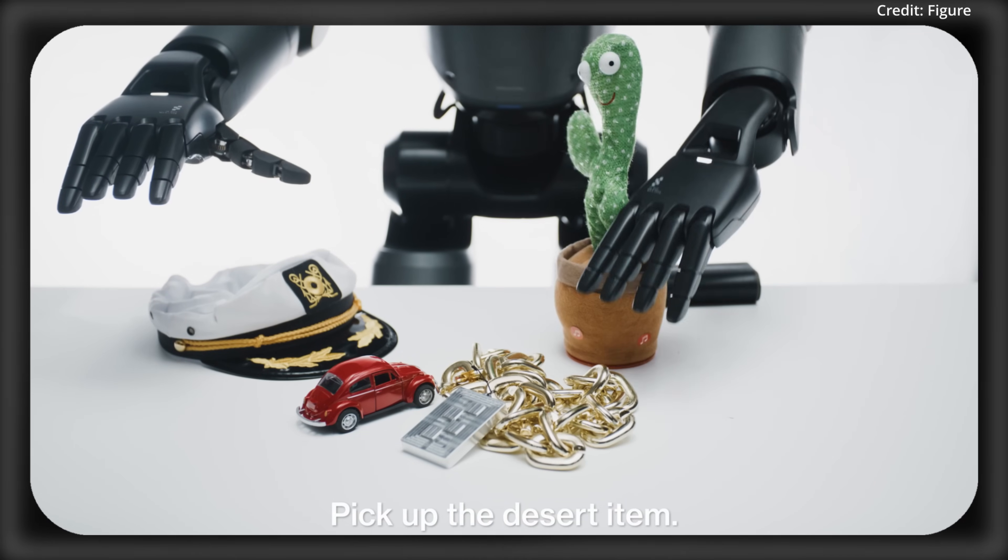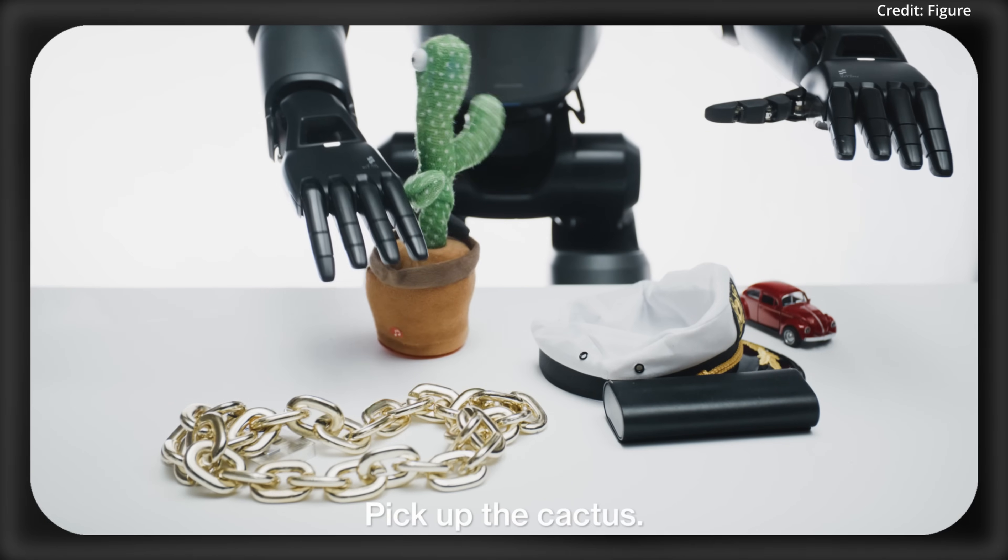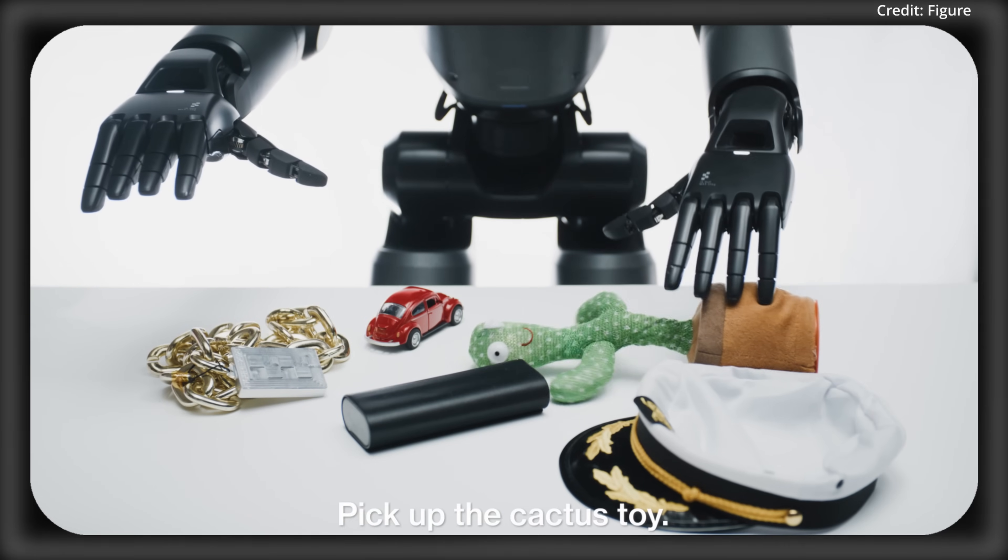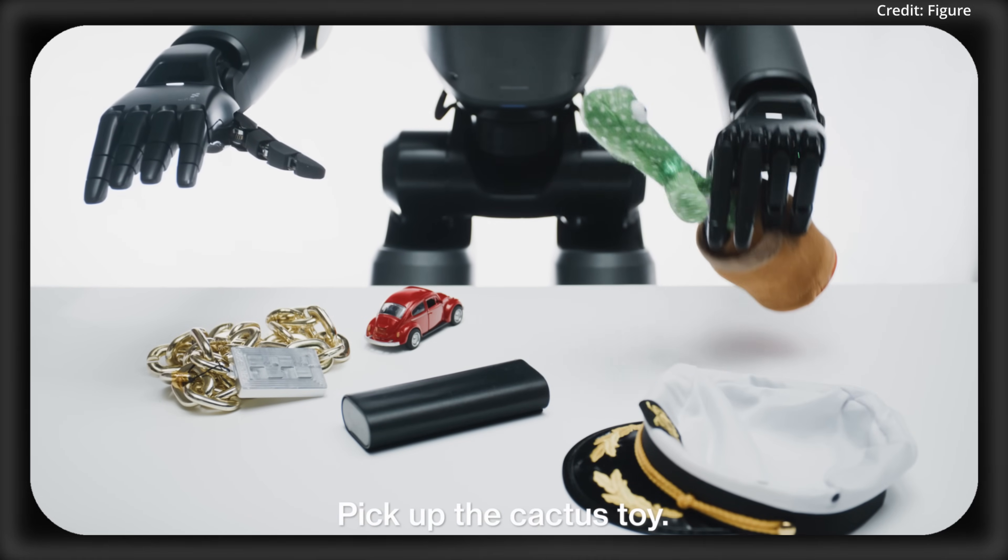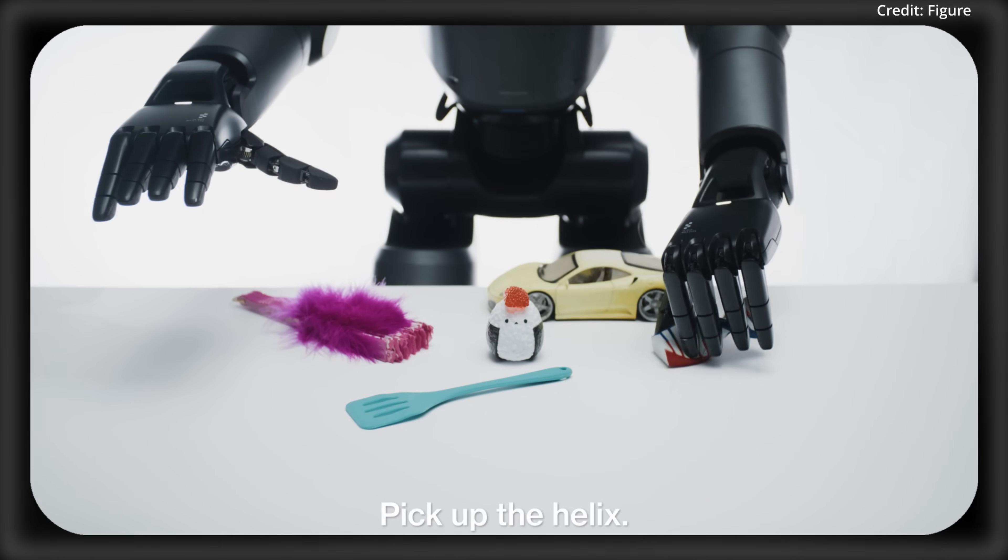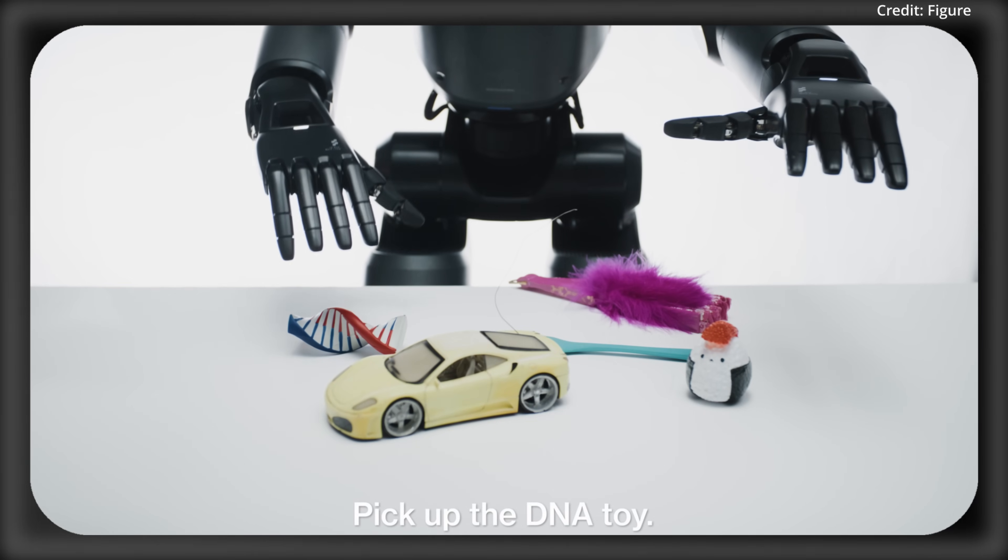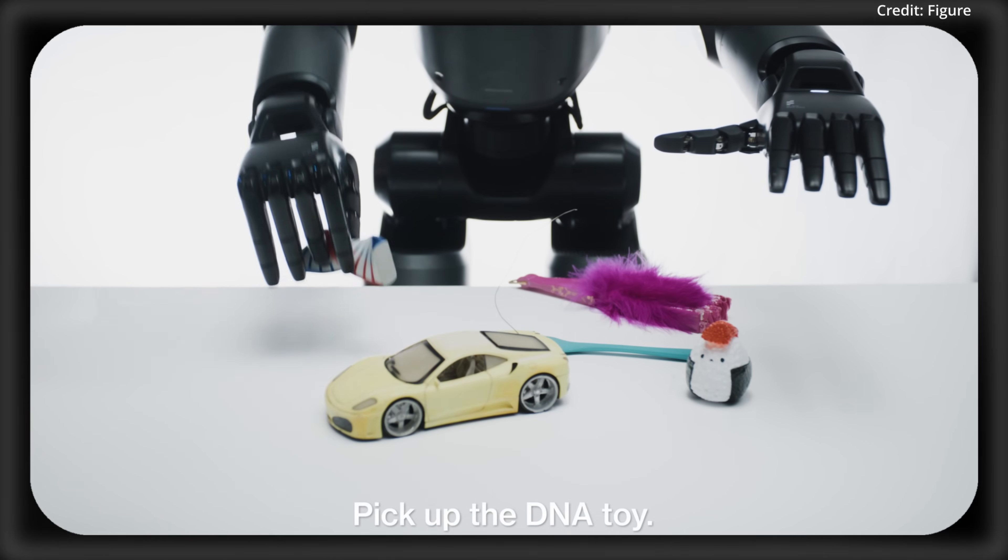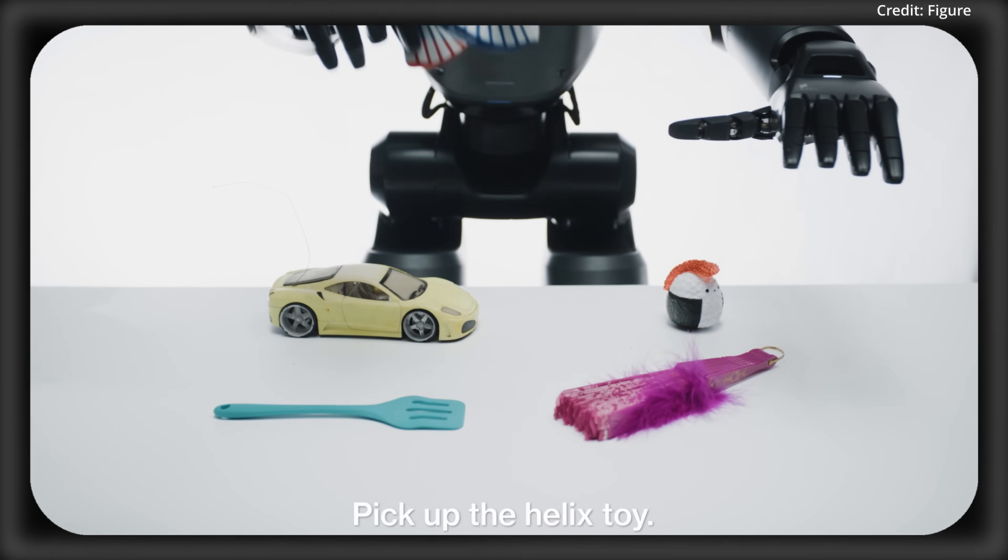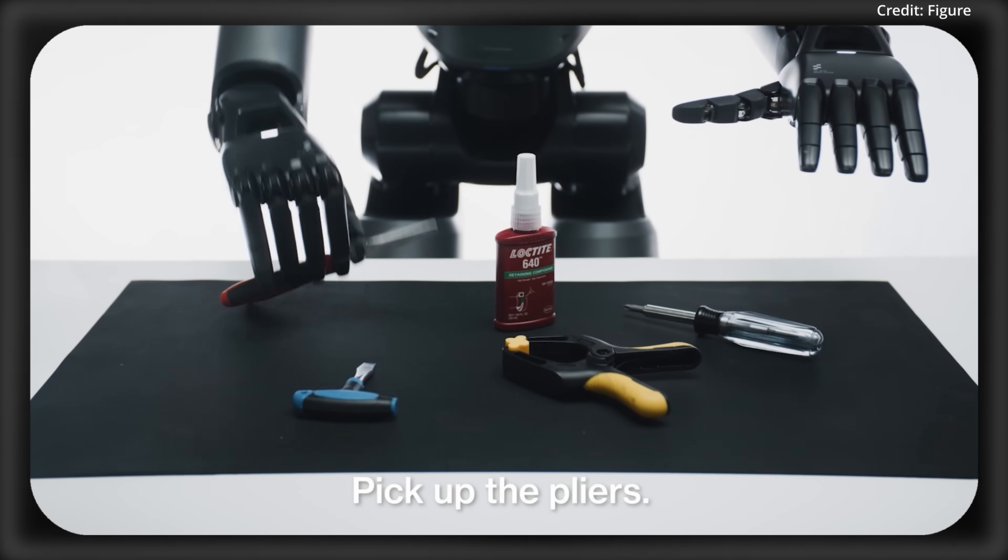For example, when told to pick up the desert item, Helix spots a toy cactus, picks the best hand, and grabs it securely. This language-to-action magic fuses internet-scale comprehension with precise control, making robots as adaptable as your imagination. This finally makes it possible for humanoids to thrive in unpredictable settings with no pre-programming at all, because by simply being told to pick something up, the robot can just learn how on the spot all by itself.